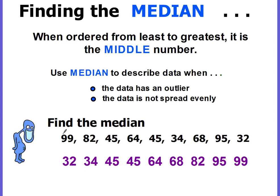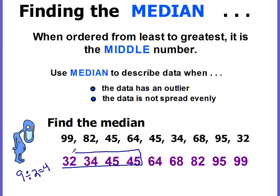Another way to find the median is to count how many numbers are in your data set. Counting gives one, two, three, four, five, six, seven, eight, nine — there are nine numbers. When I divide nine by two, I get four. So that means I'm going to have four pieces of data on the low side and four pieces of data on the high side, and the number left in the middle is the median.